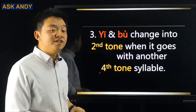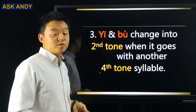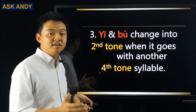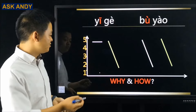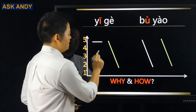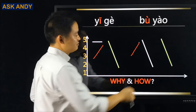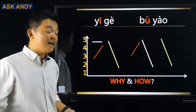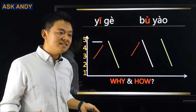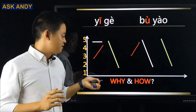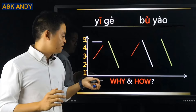Rule three: 一 (yī) and 不 (bù) change into the second tone when followed by a fourth-tone syllable. The fourth tone is a sharp falling tone — also called the 'angry tone.' When you have a fourth tone following, it's more comfortable to make the first syllable second tone instead. So 一个 becomes 'yí gè,' and 不要 becomes 'bú yào.' That creates a wave shape — rising then falling — which is more relaxing to pronounce. Try the original versions and you'll hear it's not as smooth.